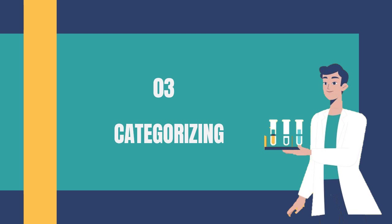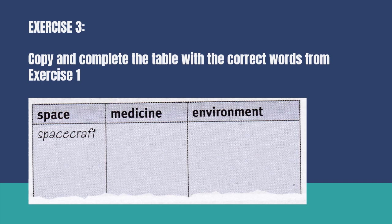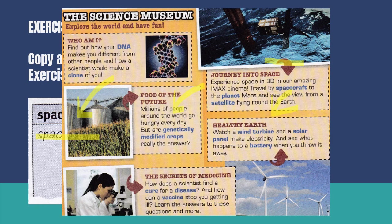Moving on to Exercise 3: copy and complete the table with the correct words from Exercise 1. An example is given — 'spacecraft' goes under 'Space.' The three categories are: Space — angkasa, Medicine — ubat-ubatan, and Environment — alam sekitar. Look at the text again and find the words highlighted in blue — like DNA, clone, spacecraft, planet — and put each one into the correct category.